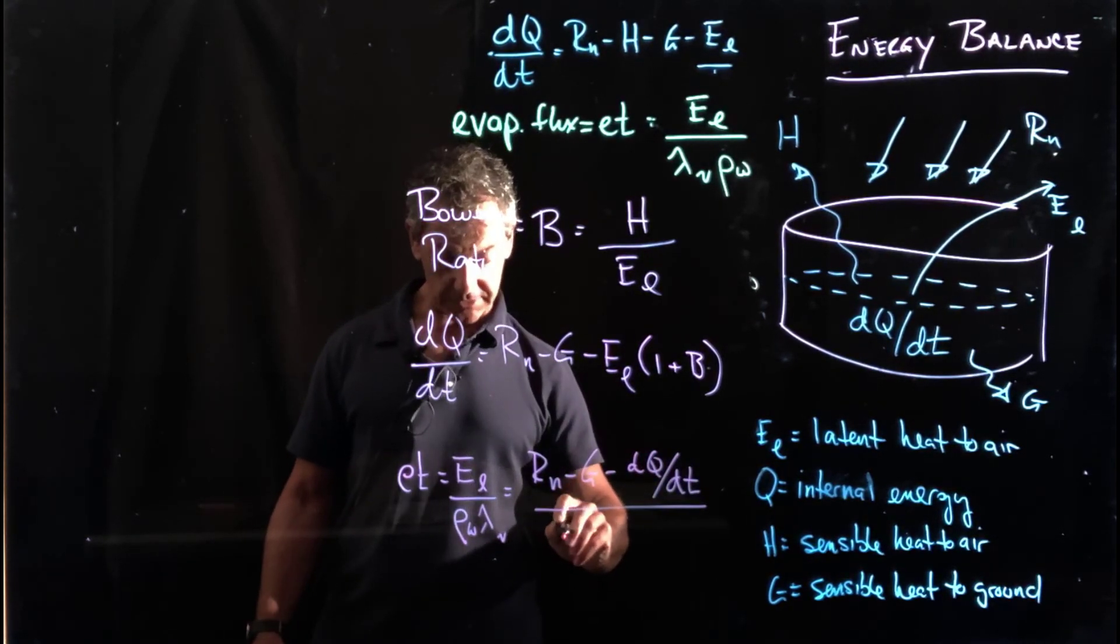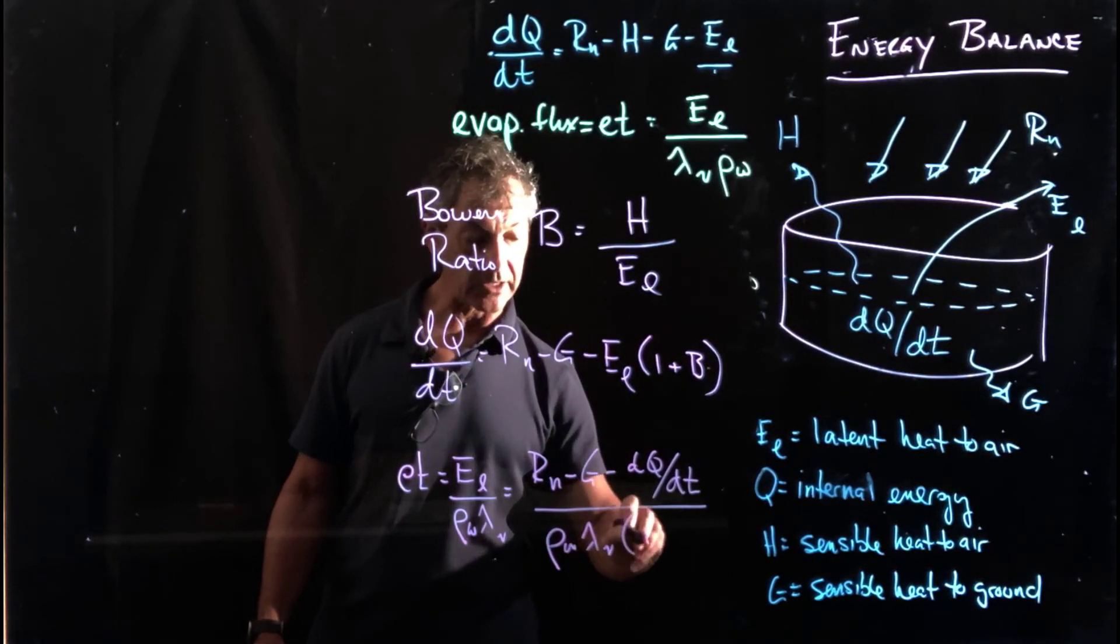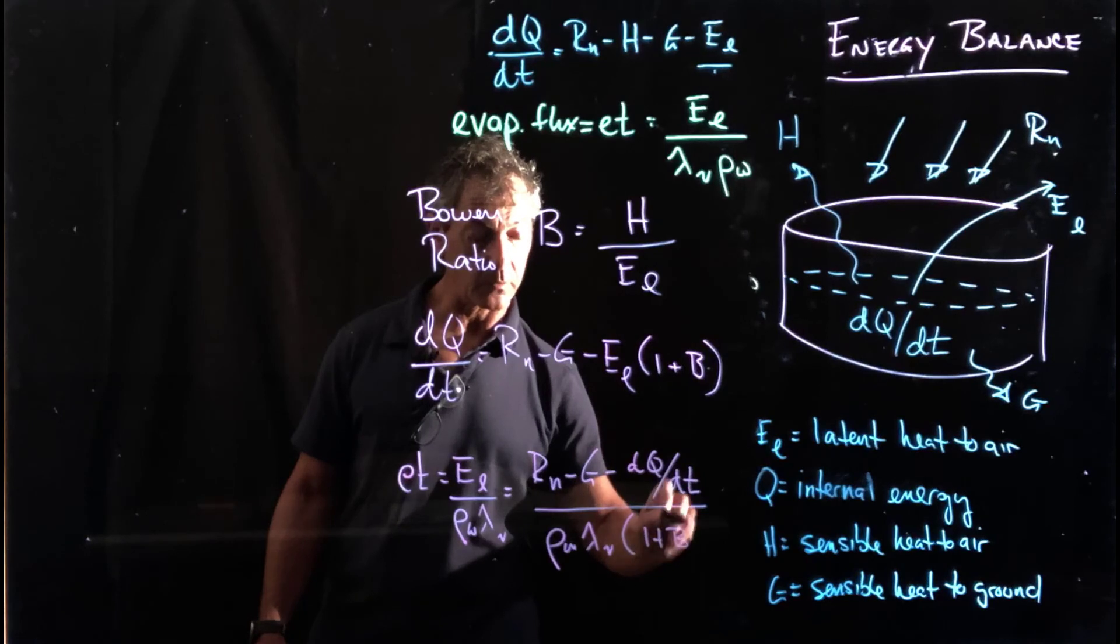And that now is divided by the density of water times the latent heat of vaporization times 1 plus B.